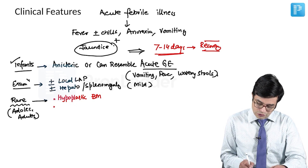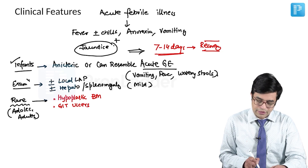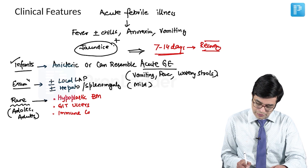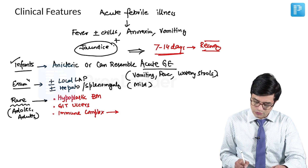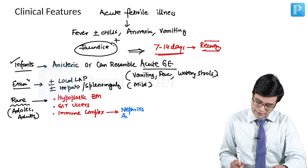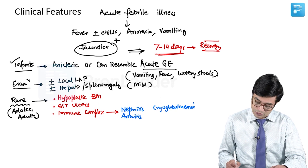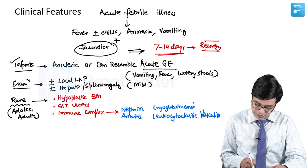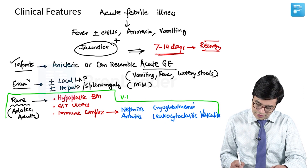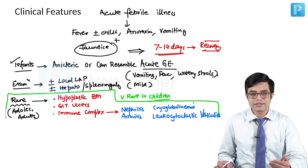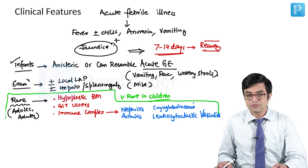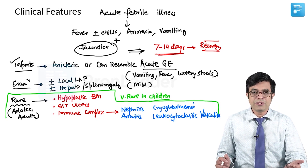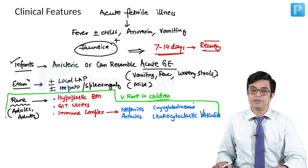These patients can develop features of GI ulcers. Some patients can develop immune complexes — although immune complex formation is more common in other viruses — which can lead to nephritis, arthritis, cryoglobulinemia, and leukocytoclastic vasculitis. All these manifestations are very rare in children; they are more common in adolescents and adults, especially those with coexisting immunosuppression, post-transplant recipients, long-term corticosteroid use, or coexisting liver disease.